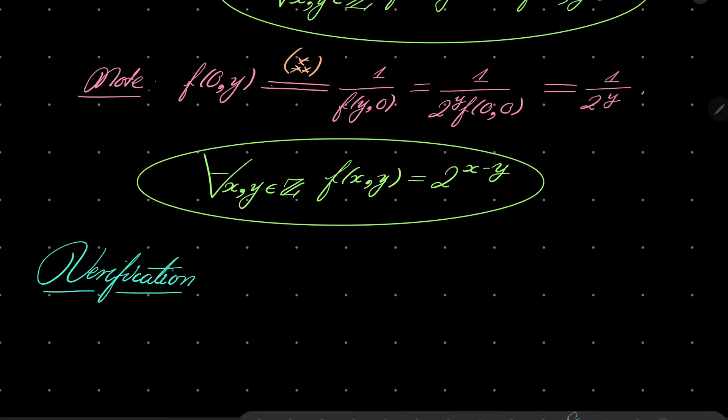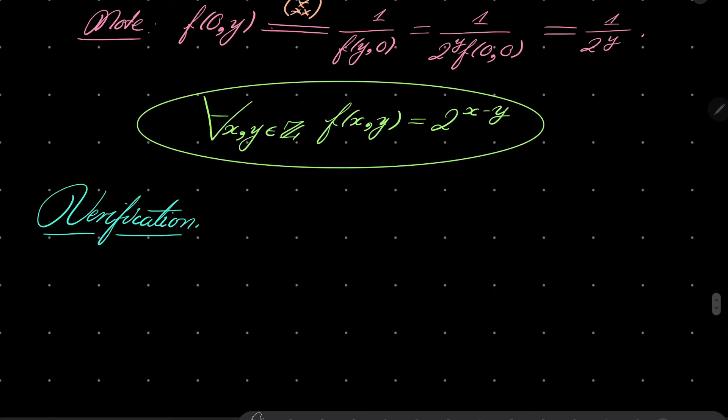Let's do verification. So we have two equations to verify. First equation: f(y,z), f(z,x), f(x,y). Well, it's 2 to the power of y minus z, 2 to the power of z minus x, 2 to the power of x minus y. So it's obviously 1. It's verified.